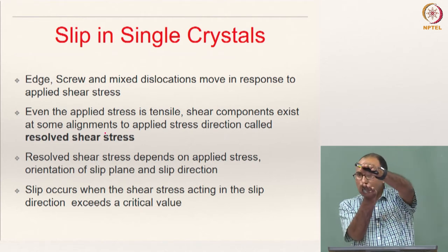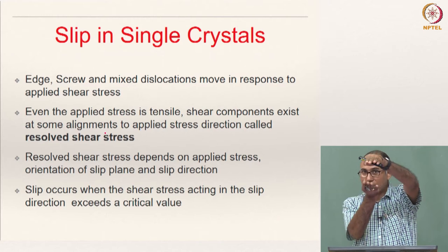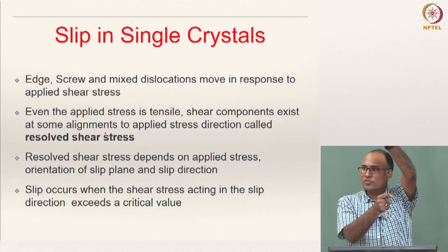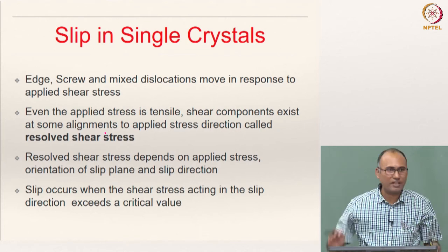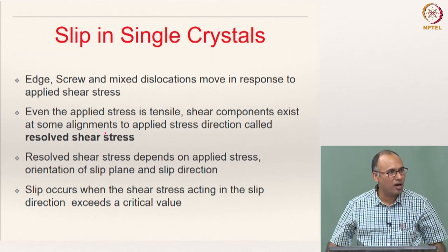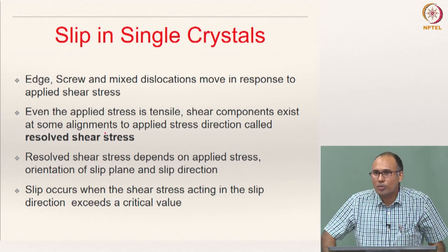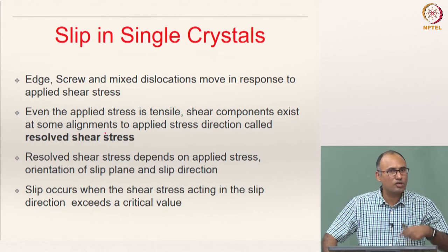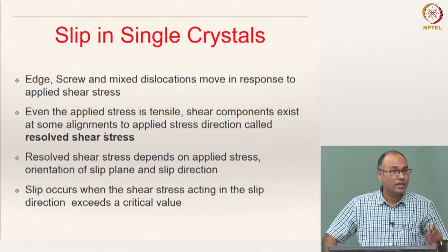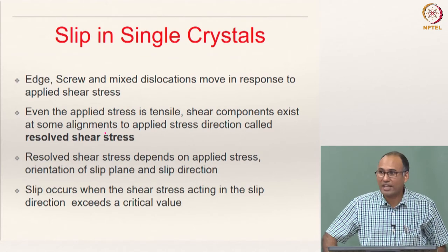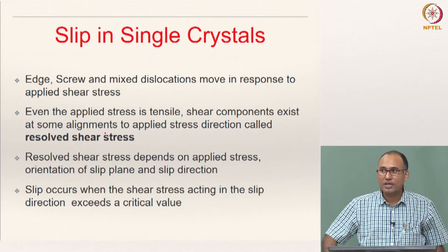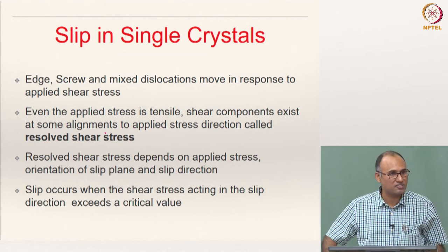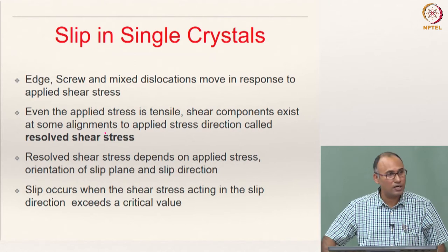If you are applying a load in a particular direction, those planes may not slip directly. But this load might effectively become a shear stress on some other plane. That is what you have learned through your Mohr's circle — given a loading direction, you can draw the Mohr's circle, identify the stress state on other planes, and identify planes along which it is pure shear with no tensile stress components.